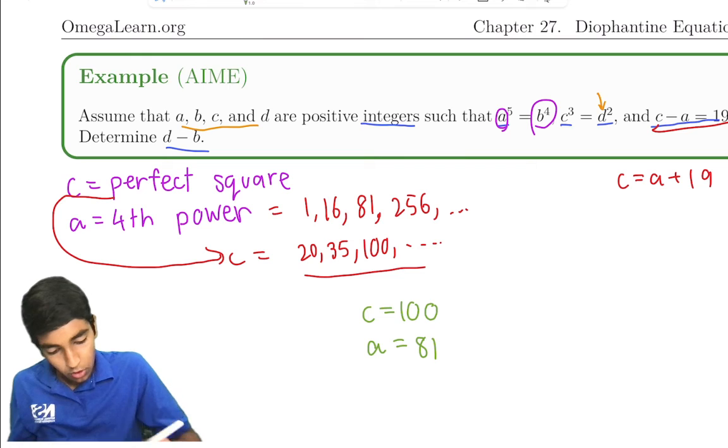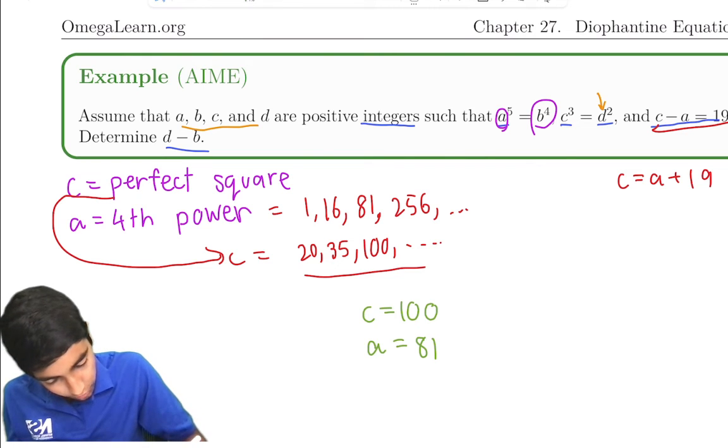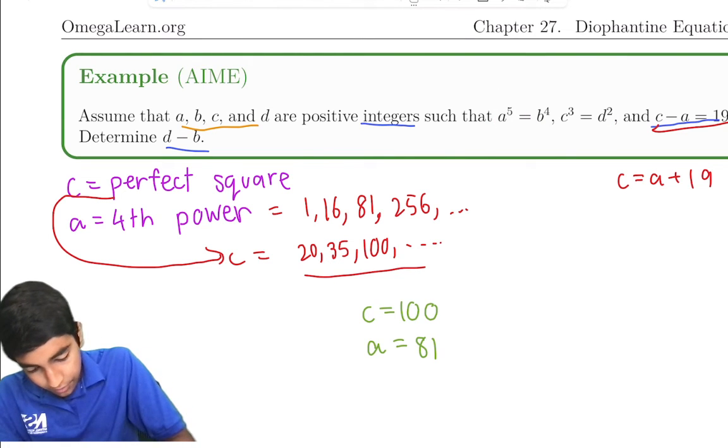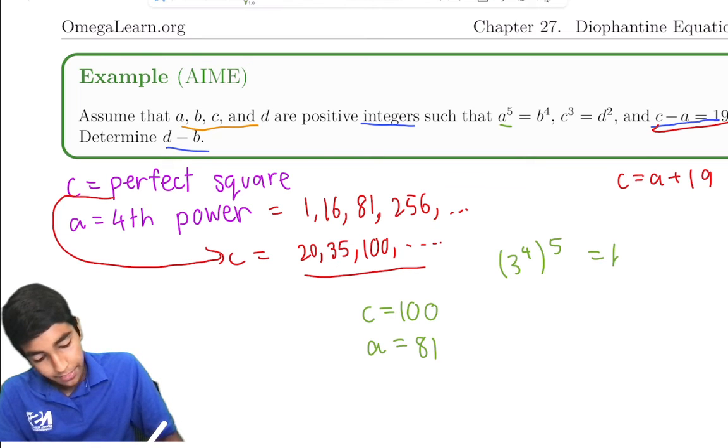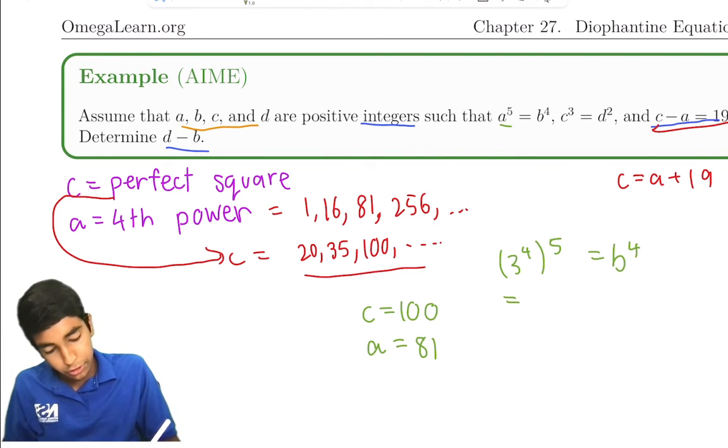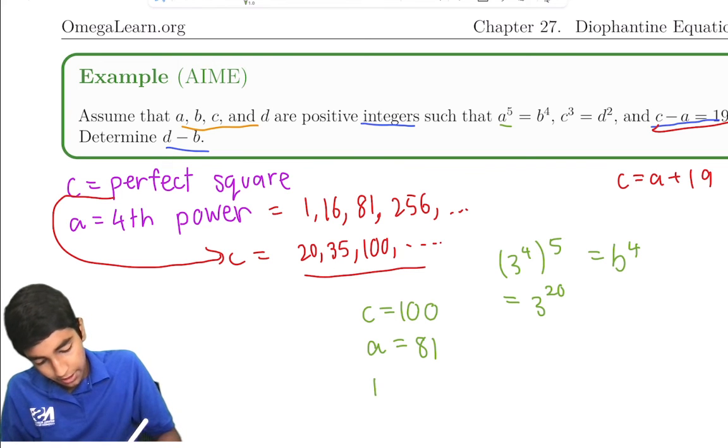Let's find d and b. So let's go back to our equations. a⁵ = b⁴. a⁵, that's (3⁴)⁵ = b⁴. This by our exponent rules is 3²⁰. So b is 3⁵, which is 243.